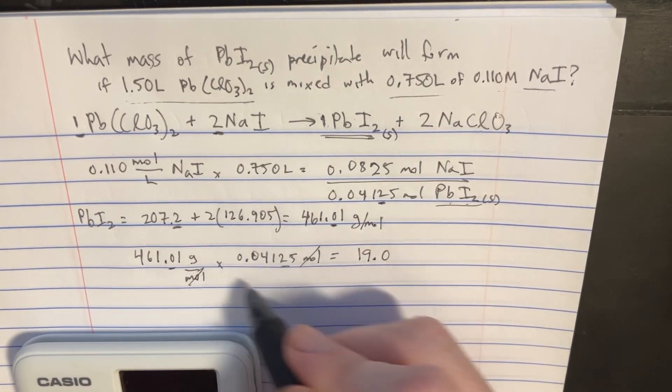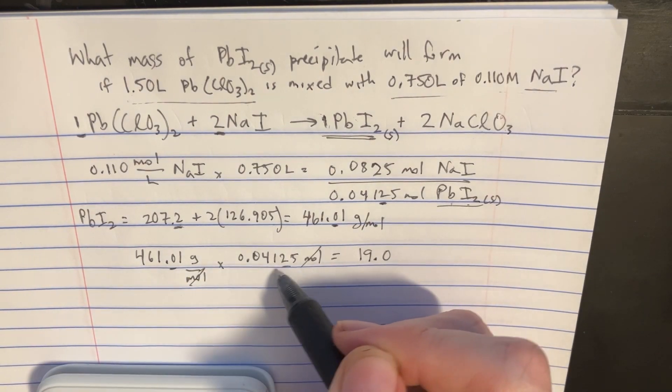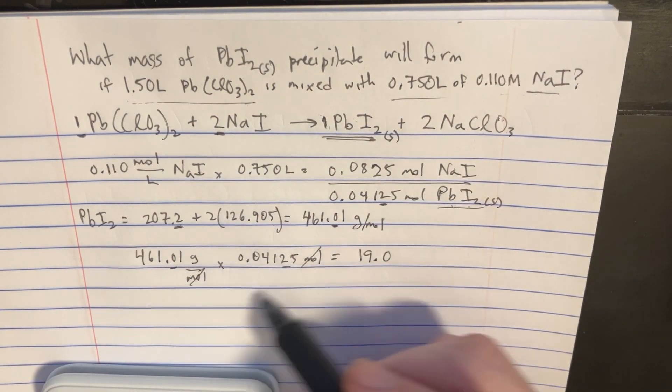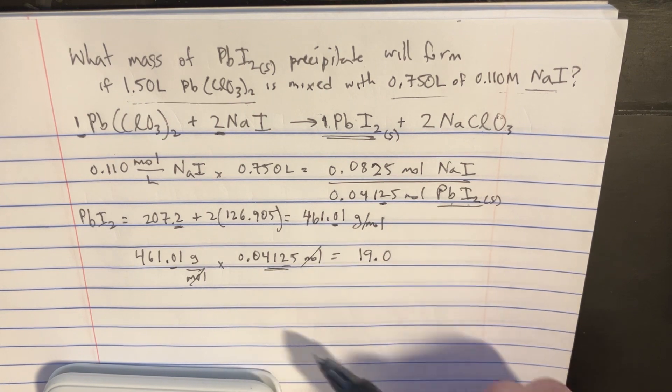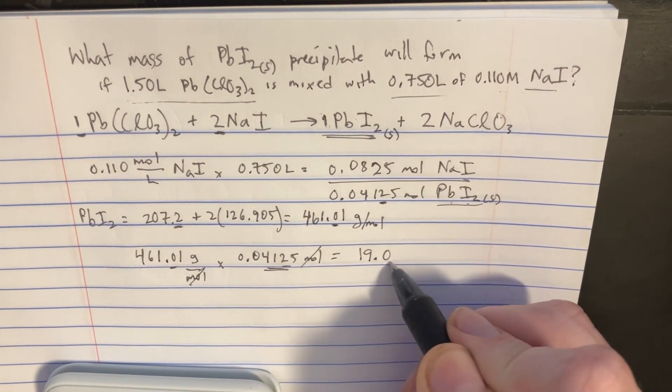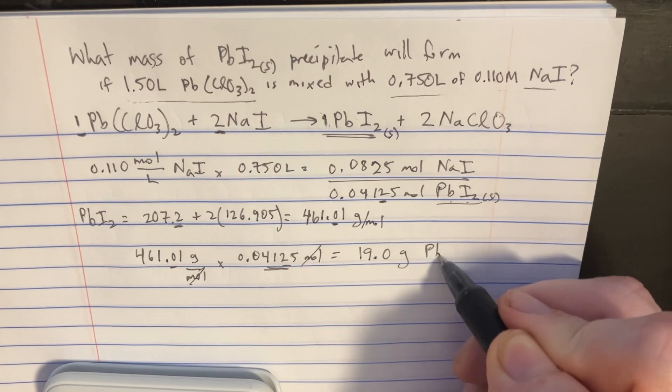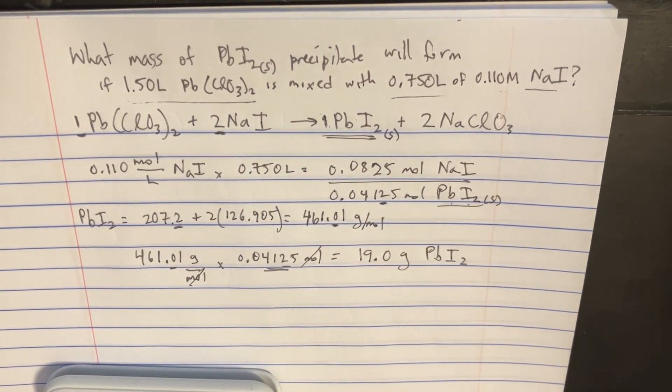If we have any sig figs, it's a multiplication problem. So we have one, two, three, four sig figs, and then only three sig figs here. So the answer should have three sig figs, 19.0 grams of the PbI₂ in the precipitate.